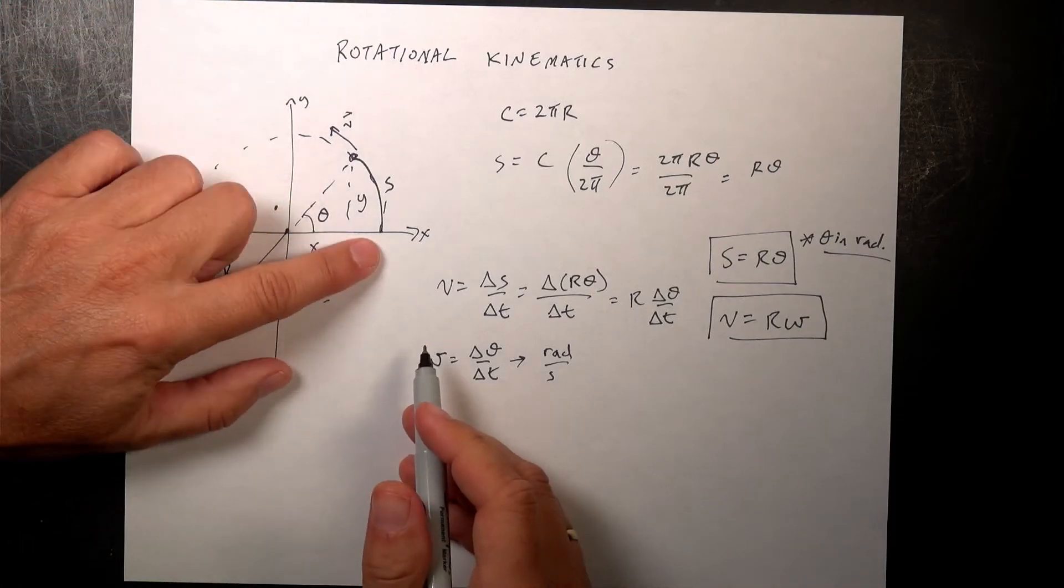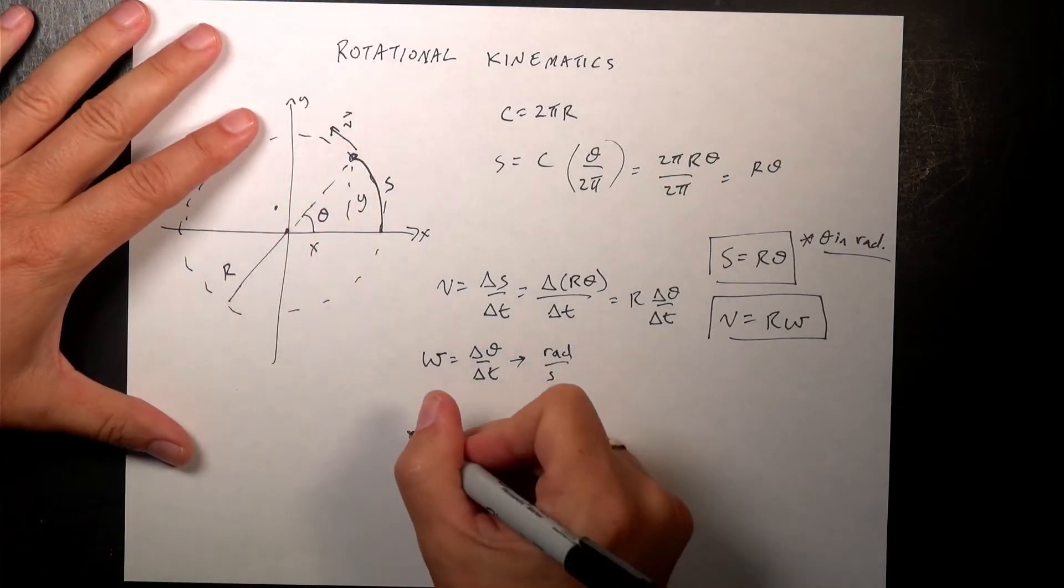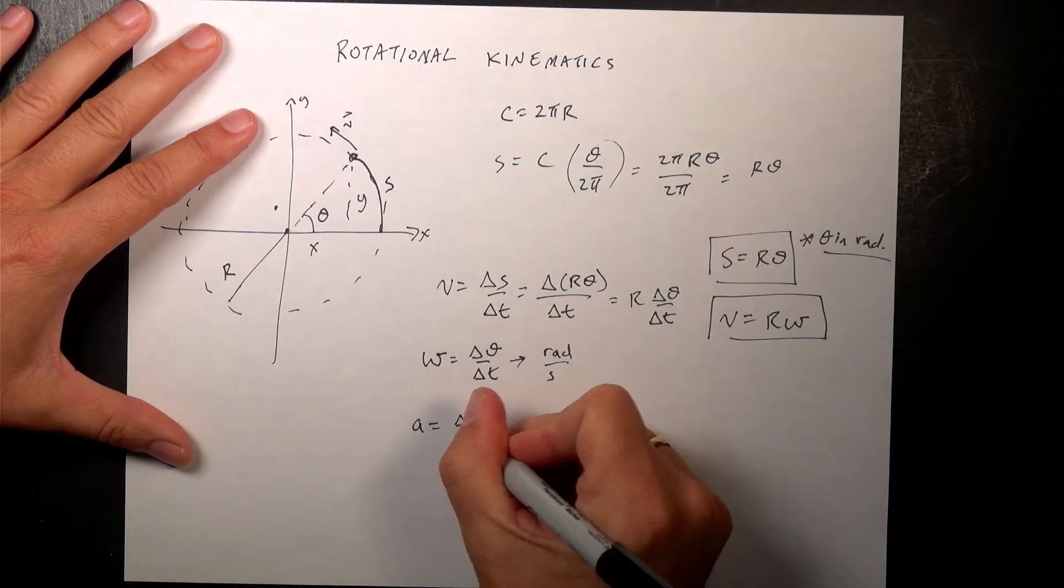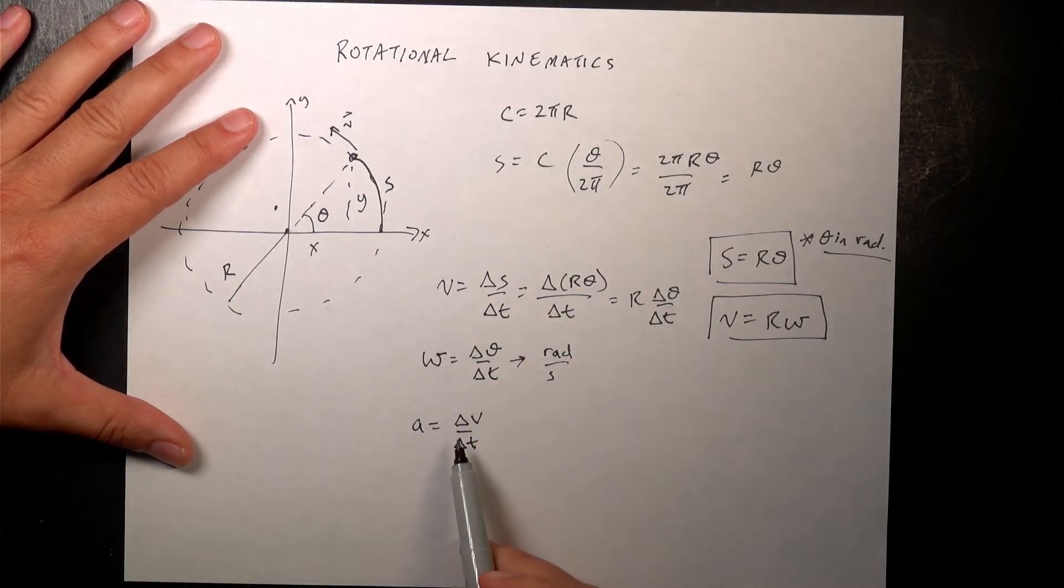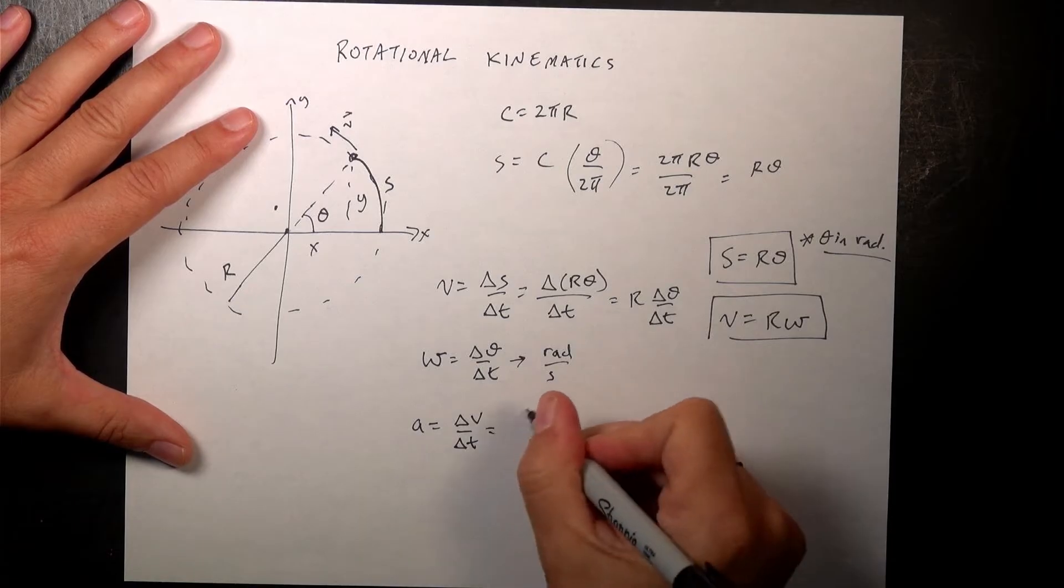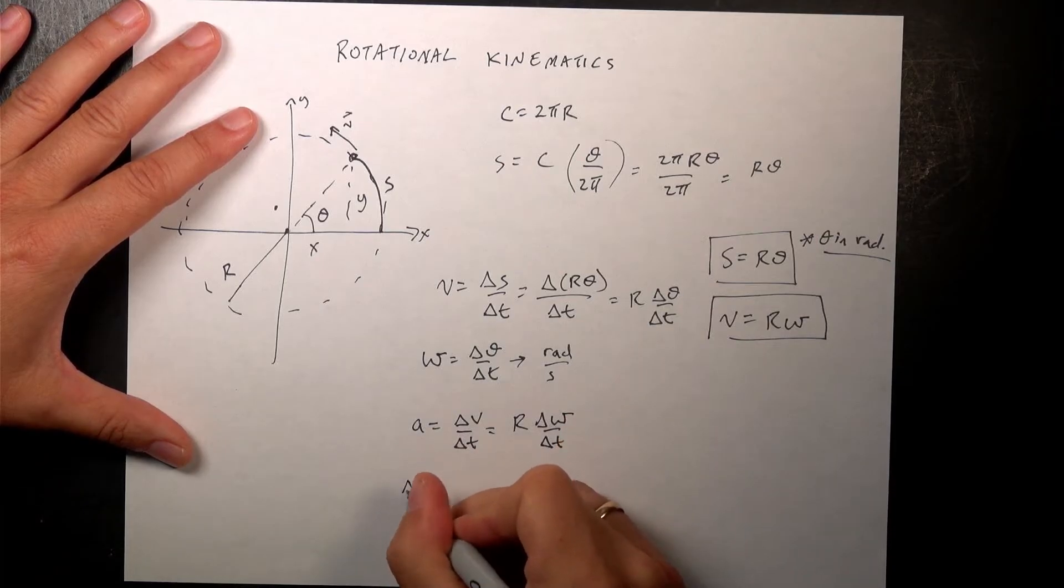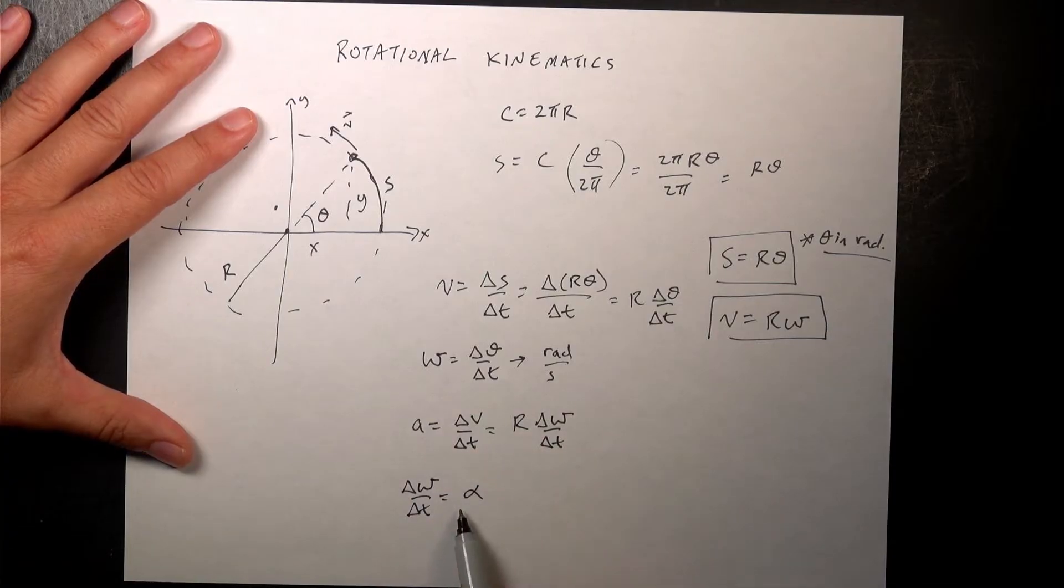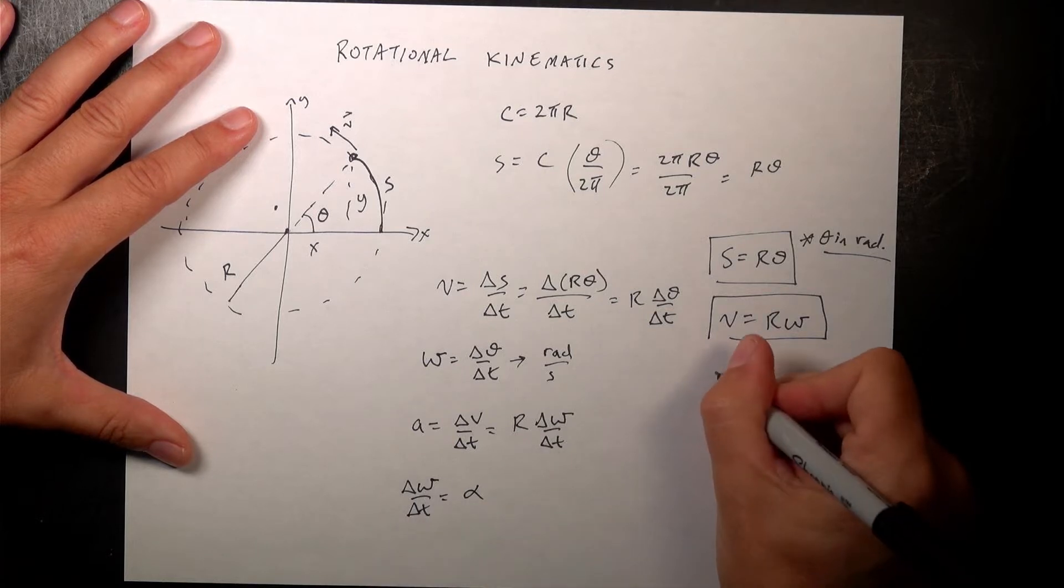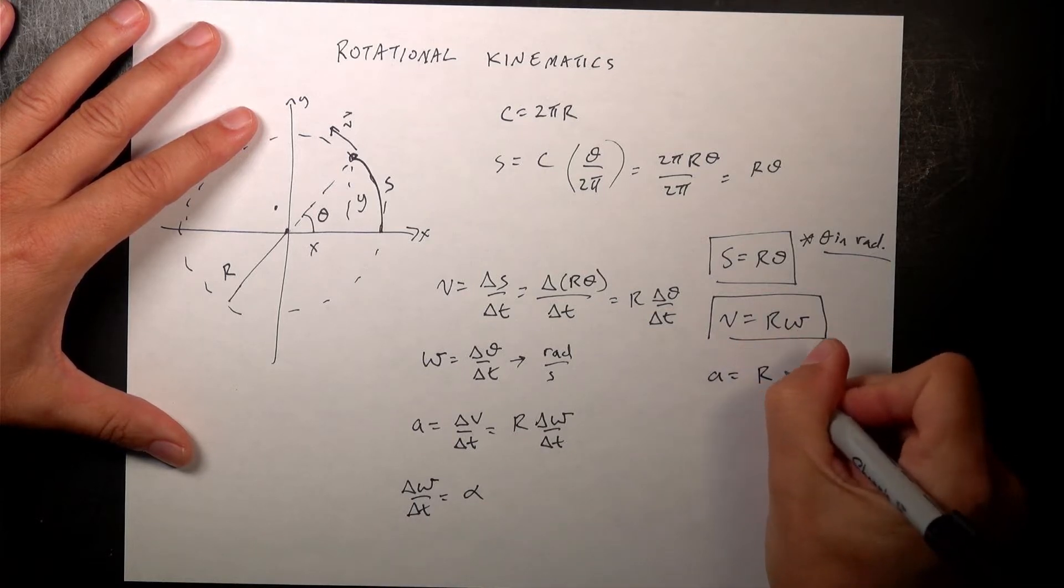Okay. Finally, we have one more thing. What if it's actually speeding up as it goes along here? I could say a is delta v over delta t, right? That's the definition of acceleration. And yes, I can use this for delta v. I get, and the r is constant, so I get r delta omega over delta t. And we call delta omega over delta t, we define that to be alpha, the angular acceleration. It's the rate that the angular velocity changes. So we get a equals r alpha.